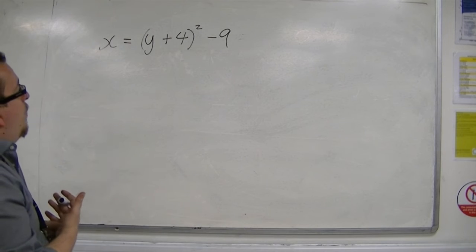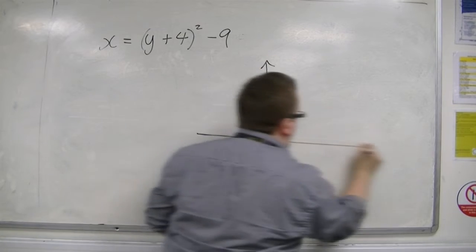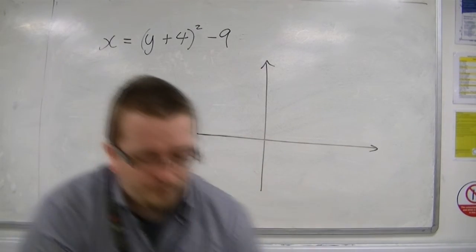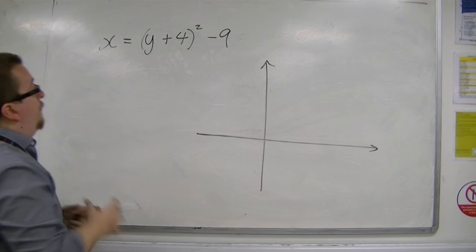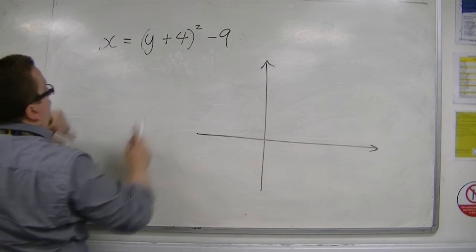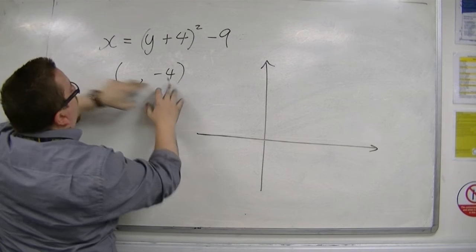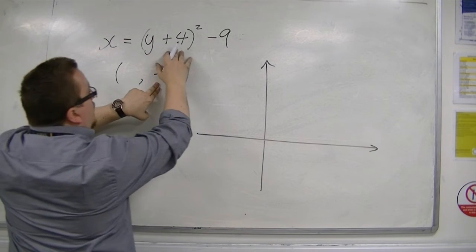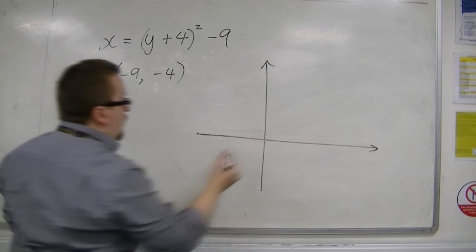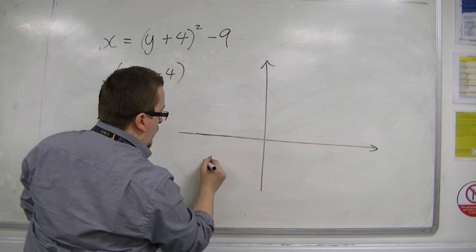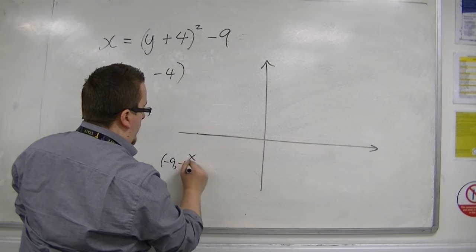Let's say we've got x equals y plus 4 squared minus 9. Let's draw ourselves some axes. Let's identify the vertex first. The vertex will be when y is minus 4. When y is minus 4, we get 0 squared take away 9, so x is minus 9. So minus 9, minus 4 will be somewhere down here.